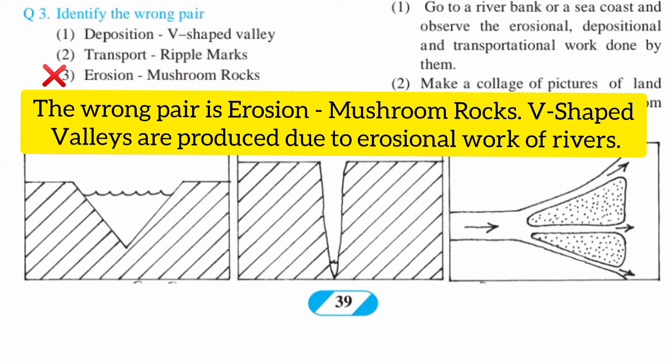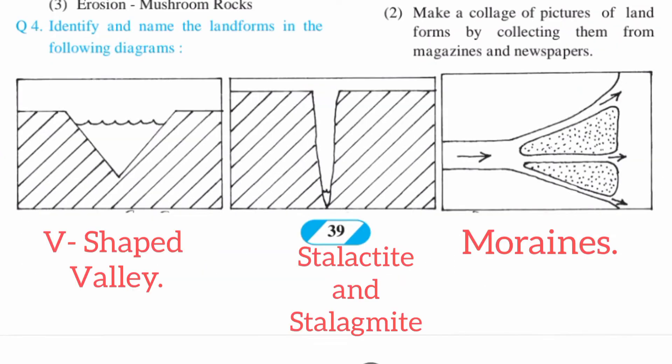Question number 3: identify the wrong pair. The third one is wrong — erosion: mushroom rocks. The reason behind this is that V-shaped valleys are produced due to the erosional work of rivers. Question number 4: identify and name the landforms in the following diagrams.